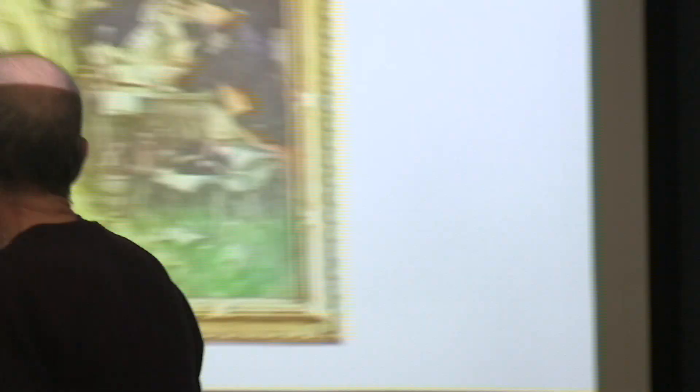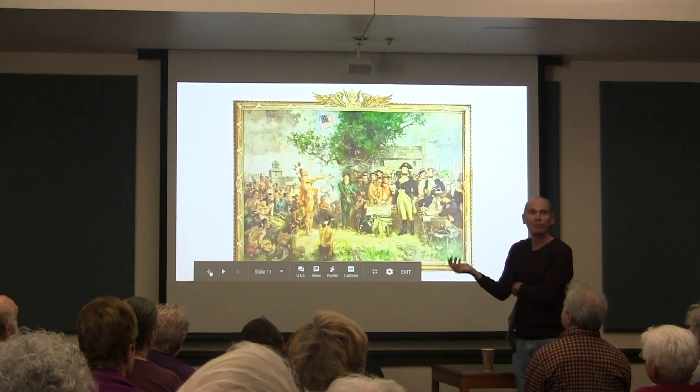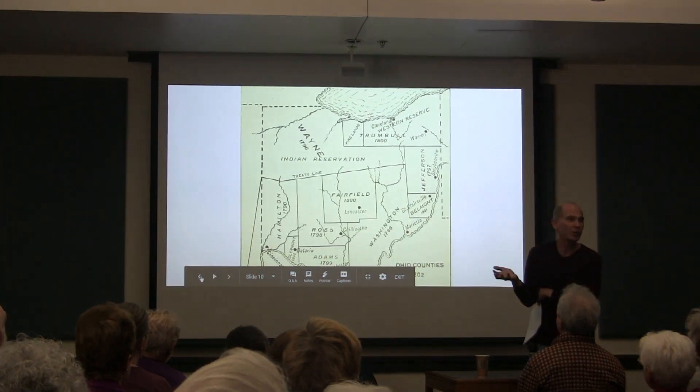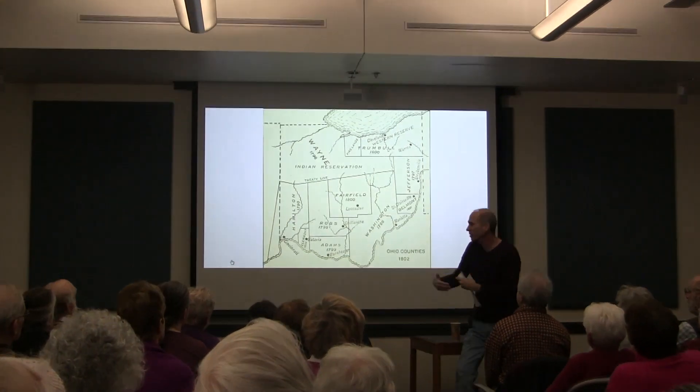As for the Ohio Company of Associates, they eventually divided all their shares among various stockholders who sold land on their own, ceasing to exist almost as soon as the Treaty of Greenville was signed in 1795. Finally, after the Treaty of Greenville, a Connecticut man named Moses Cleveland took considerable encouragement from the new situation in the Ohio country.